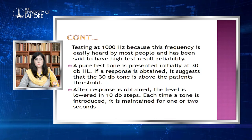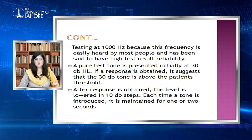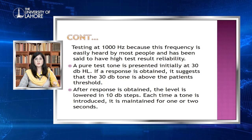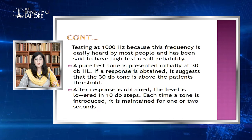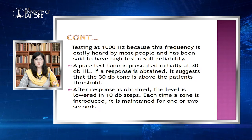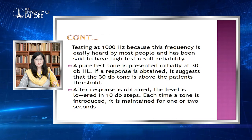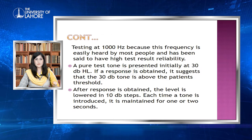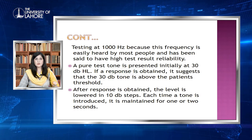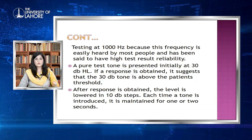Testing begins at 1000 Hz because this frequency is easily heard by most people and has high test-retest reliability. A pure test tone is presented initially at 30 dB hearing level; if a response is obtained, it suggests the 30 dB tone is above the patient's threshold. A range of 30 to 50 dB is recommended for starting the test. After a response is obtained, the level is lowered in 10 dB steps. Each time a tone is introduced, it is maintained for 1 to 2 seconds.